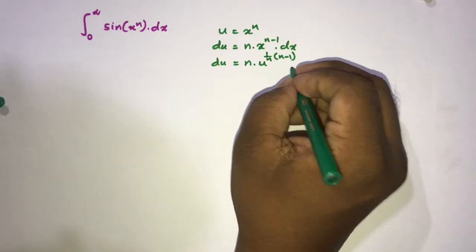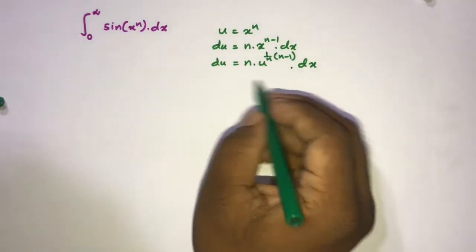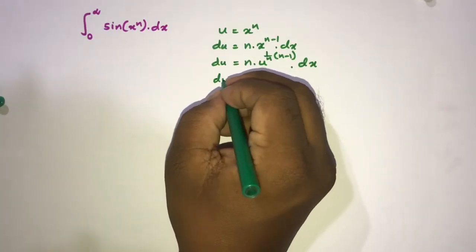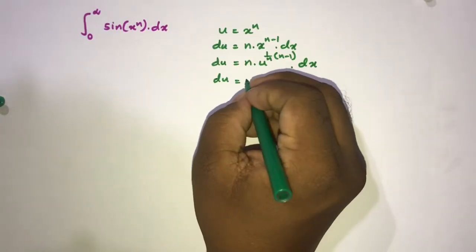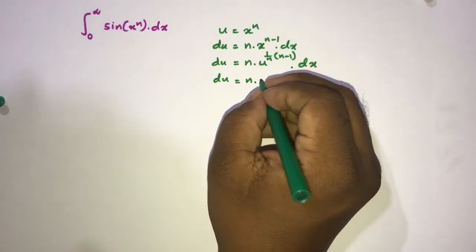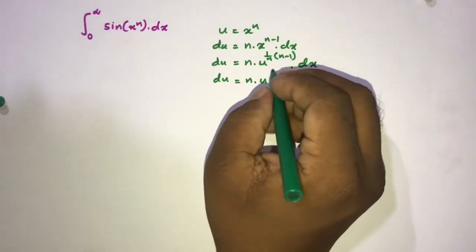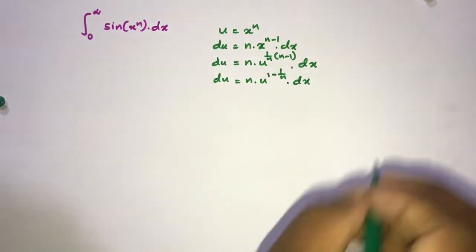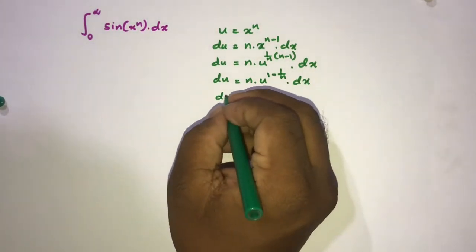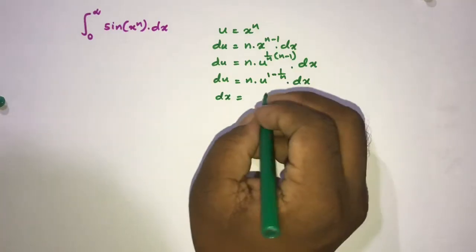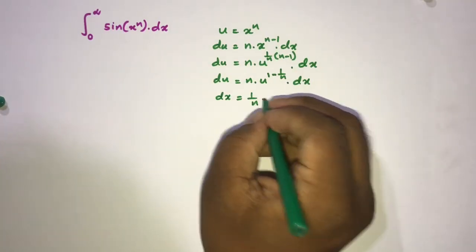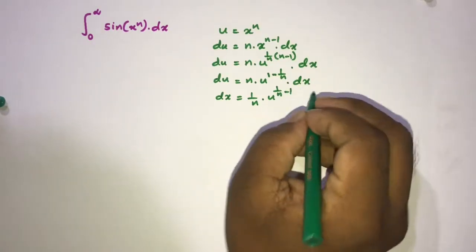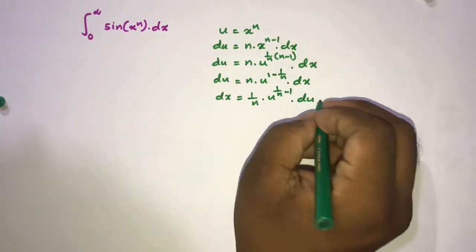Simplifying further, we get u to the power (1 minus 1 over n) dx. Now we can isolate dx, so dx is equal to 1 over n times u to the (1 over n minus 1) du.